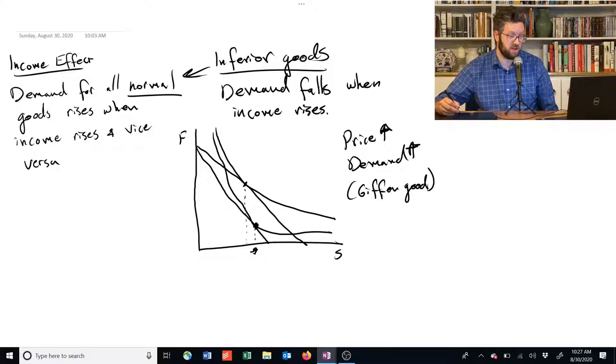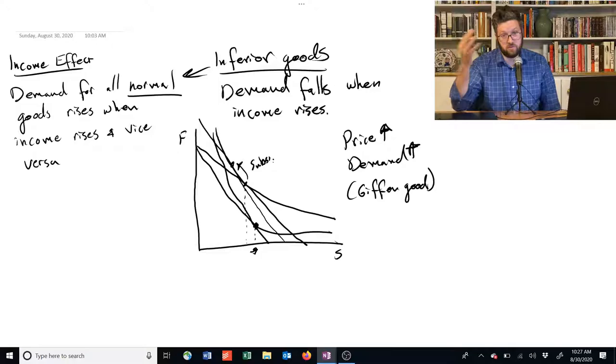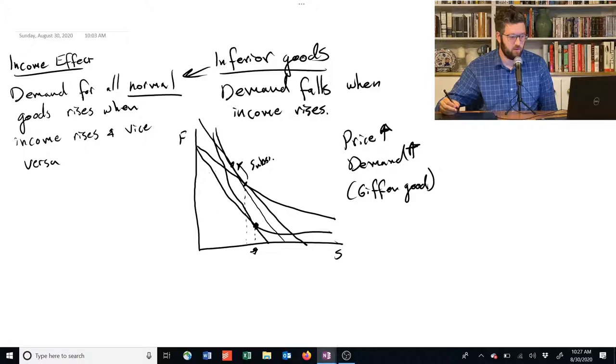Let's decompose the income and substitution effects to see what's happening. So the income effect is going to give us a line that looks sort of like this. Kind of a standard effect.